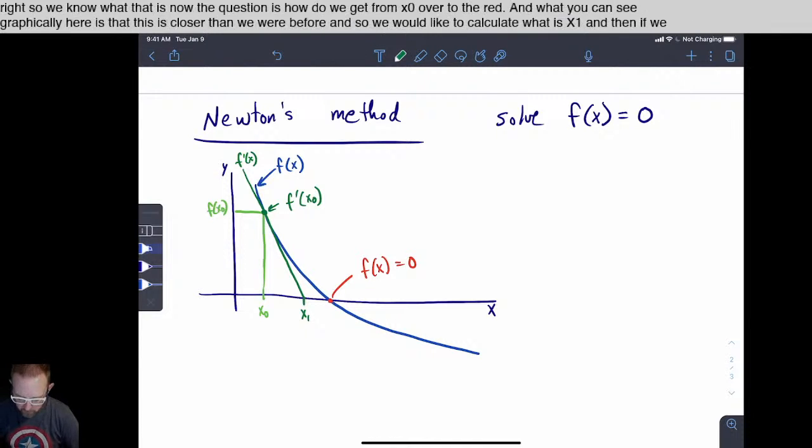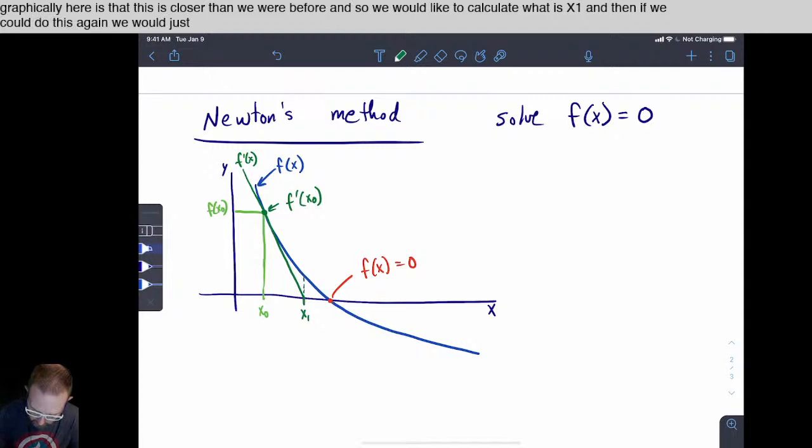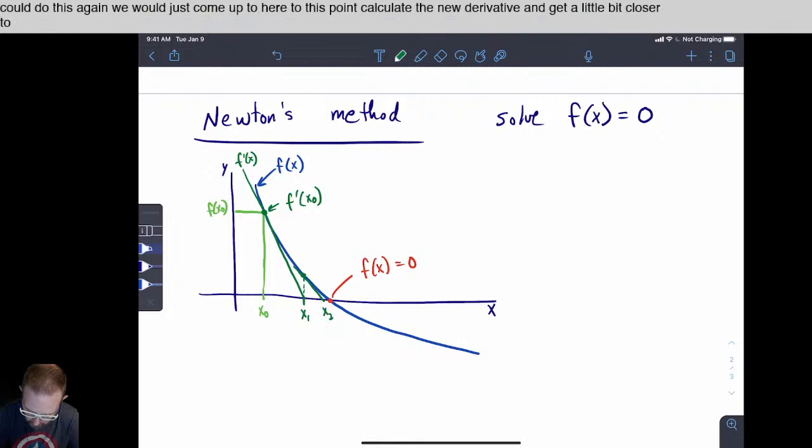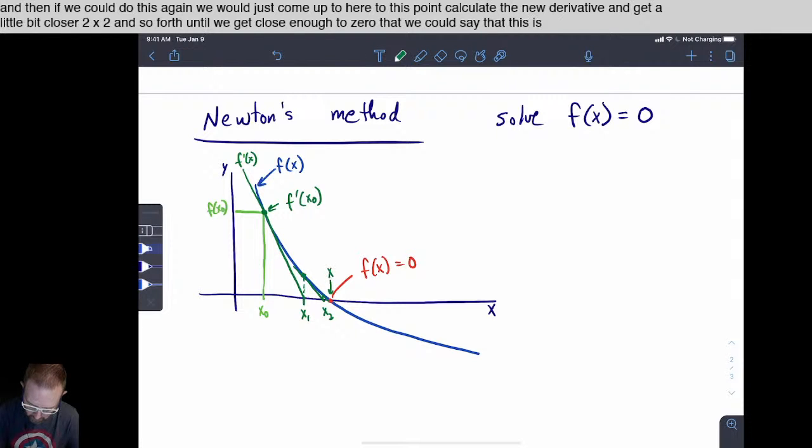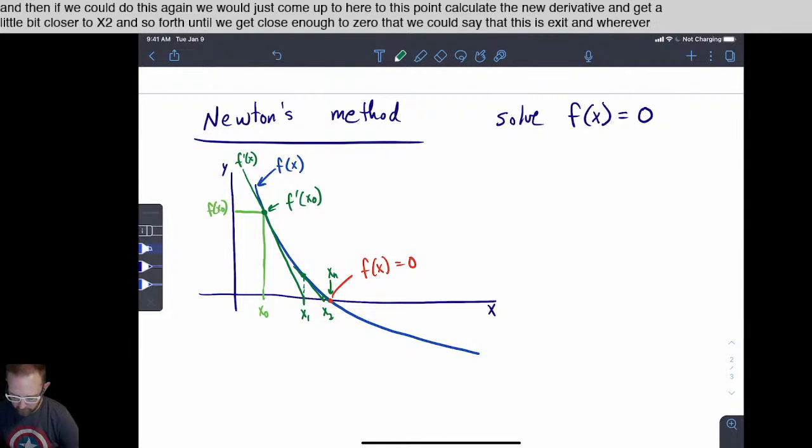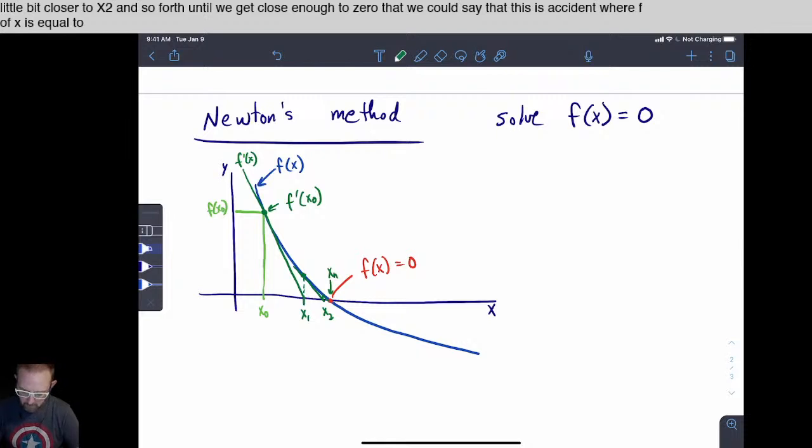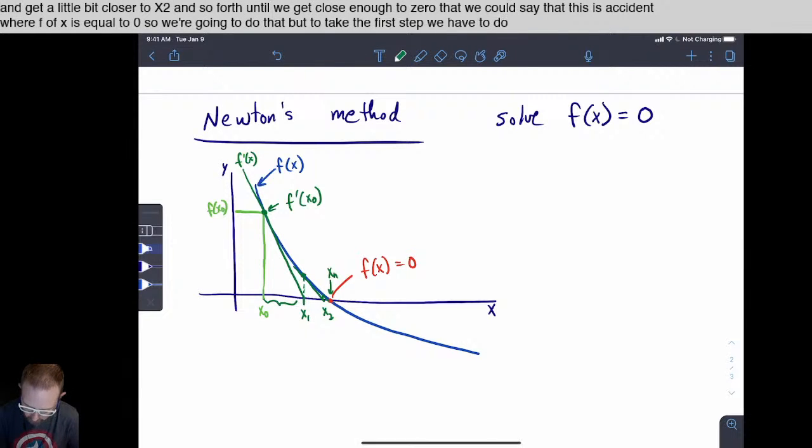And then if we could do this again, we would just come up to here to this point, calculate the new derivative and get a little bit closer to x two and so forth until we get close enough to zero that we could say that this is x of n where f of x is equal to zero. So we're going to do that. But to take the first step, we have to calculate what is x one.